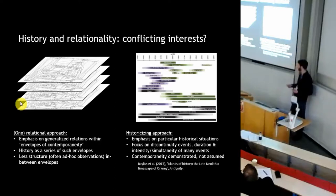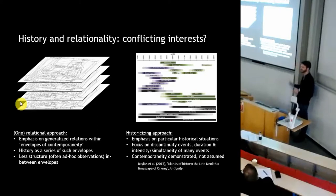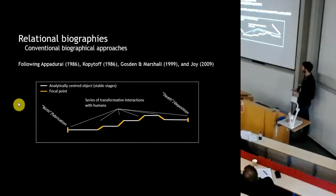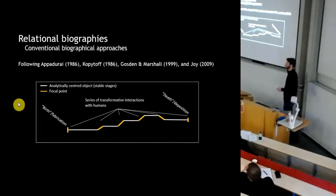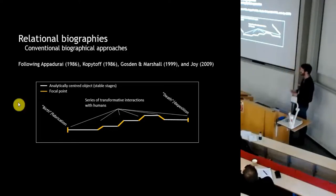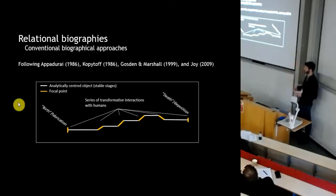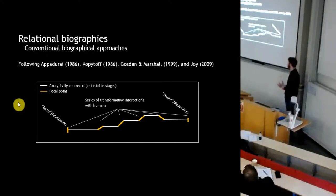I want to argue that we can work with both of these sets of concerns, and in bringing them together do something more robust than either done on its own. I come from a background in object biographical research in archaeology, which traditionally means something like following the Appadurai and Kopytoff example — the social lives of things. We analytically center an object from a museum or excavation context and focus on a series of transformative interactions that object had with humans, looking at how the biographies of human beings and objects intertwine over time.